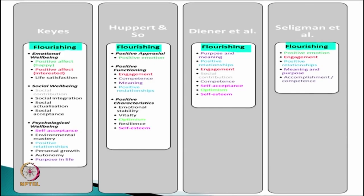This slide is very informative because in this slide we have only one term, but this term is defined differently by different scholars. For example, Keyes' flourishing is different, Huppert and So's flourishing is different, Diener et al.'s flourishing is different, Seligman et al.'s flourishing is different. However, some of these factors are common in different theories, while some other factors are unique in these theories.